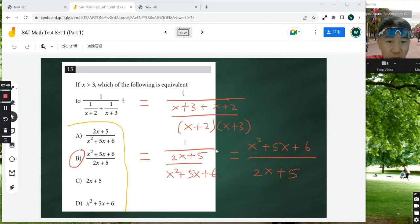So 1 over this fraction here. And you do a 1 over. So essentially, you need to calculate the inverse of this. And so you need to flip it upside down. So 1 over this fraction is equivalent to x squared plus 5x plus 6 divided by 2x plus 5.